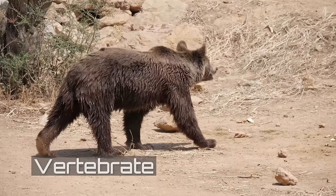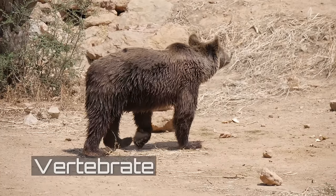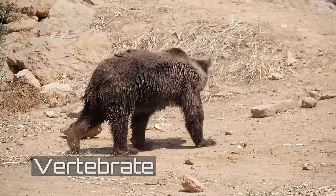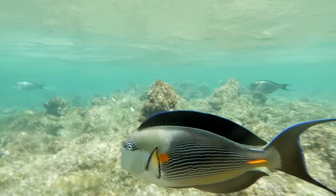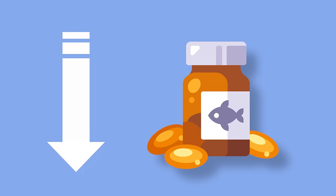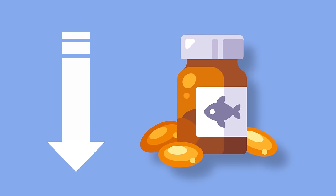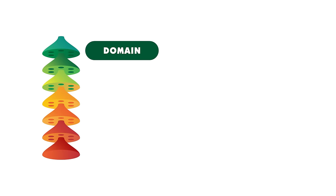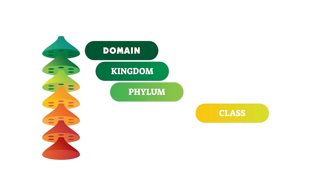Vertebrates, on the other hand, can either be warm-blooded like mammals or cold-blooded like fish. They have a very developed blood vascular system, but their ability to regenerate is usually poor.